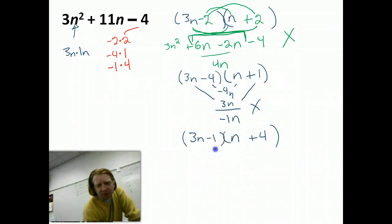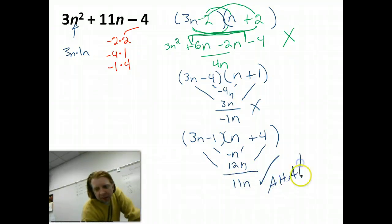Sorry. I don't think violence is necessary. So negative n. And 3n times 4 is 12n. And they combine to a total of 11n. Aha! Not just an 80s band. Absolutely.